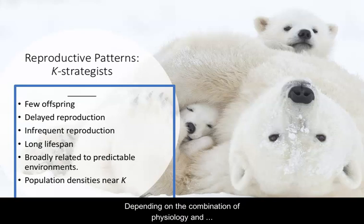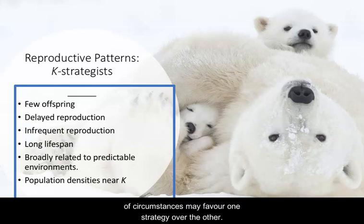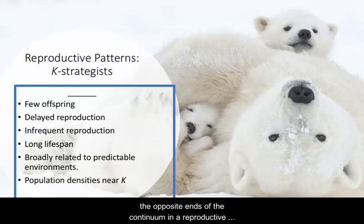Depending on the combination of physiology and environment, natural selection may favor one strategy over the other. However, R- and K-strategists represent opposite ends of a continuum in reproductive patterns, and many species lie between these two extremes.